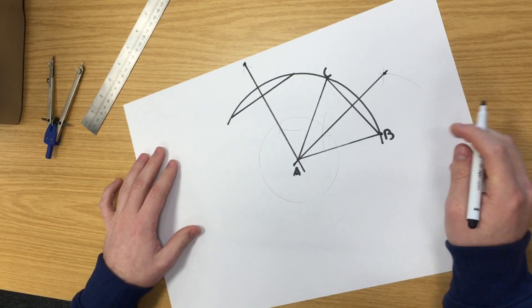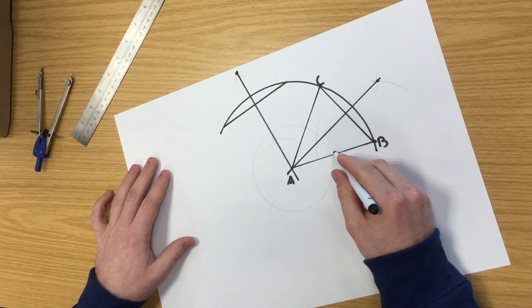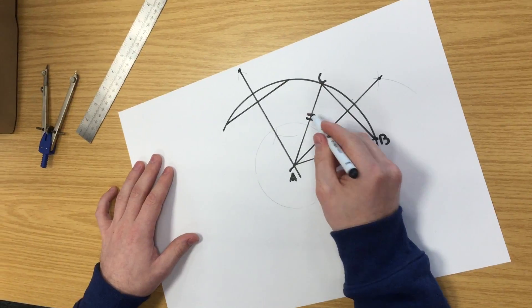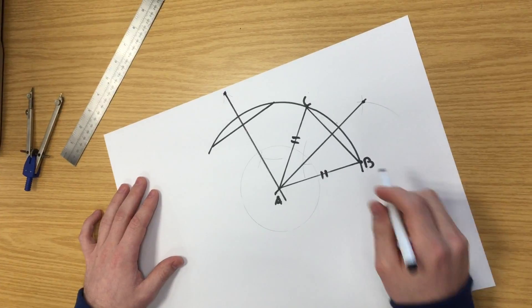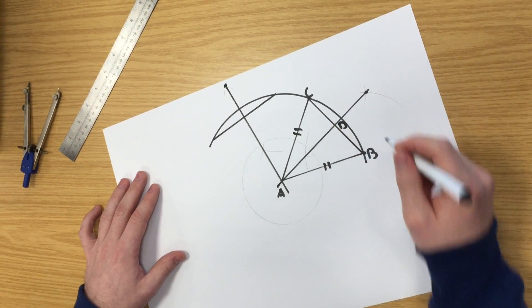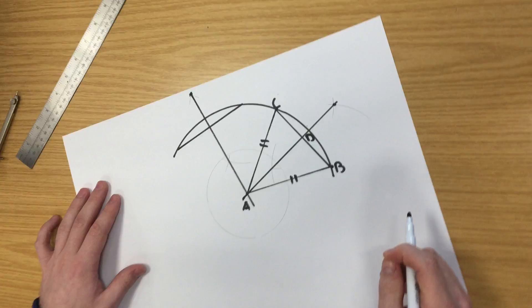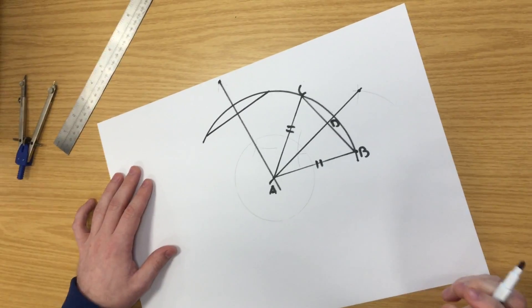AB is going to equal AC because they're both the radius of the curve. AD then is going to equal AD because they're both on the same triangle.